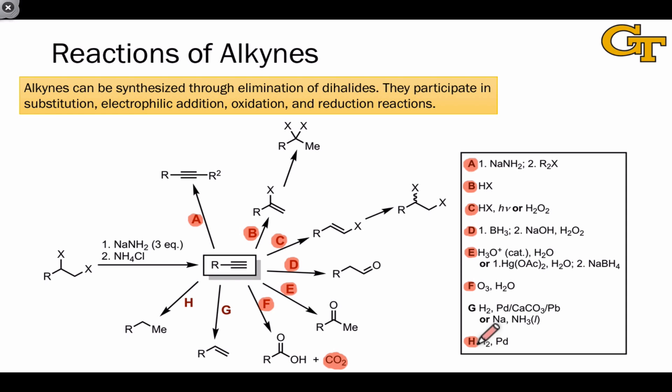Simple hydrogenation, with H2 and a palladium or platinum catalyst, gives rise to alkanes. But if we wish to stop this hydrogenation early, we need to use different reaction conditions. Use of H2 and Lindlar's catalyst gives rise to a cis alkene product.